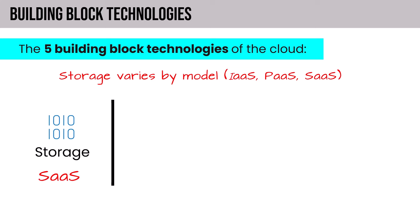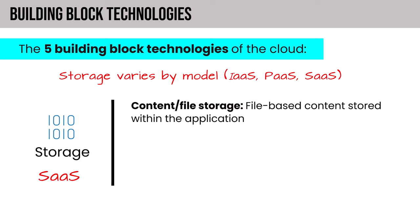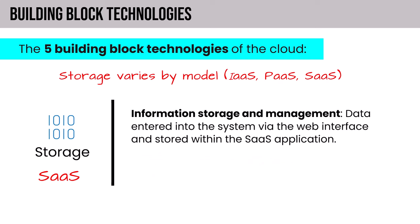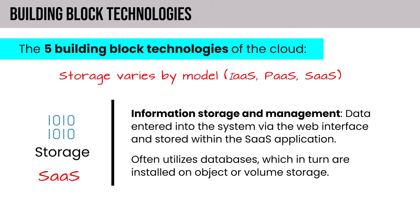In the SaaS storage context, we have content or file storage — file-based content stored within the application, with Microsoft Office as the perfect example. A content delivery network stores content in object storage and replicates it to multiple geographically distributed nodes to improve internet consumption speed, placing content near the points of presence where customers will access a service. There's also information storage and management, where data entered via the web interface is stored within the SaaS application, often utilizing databases installed on object or volume storage.